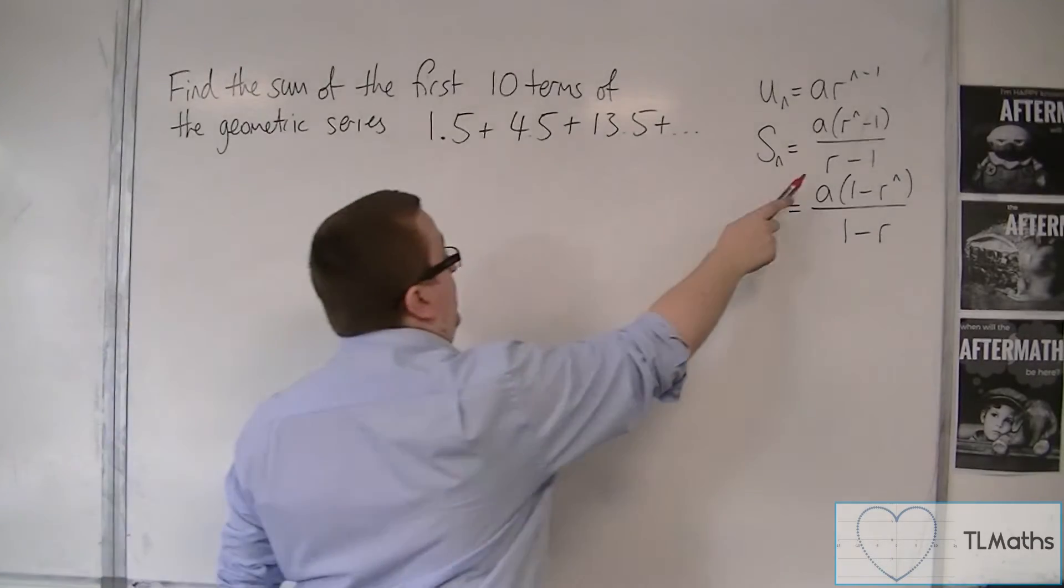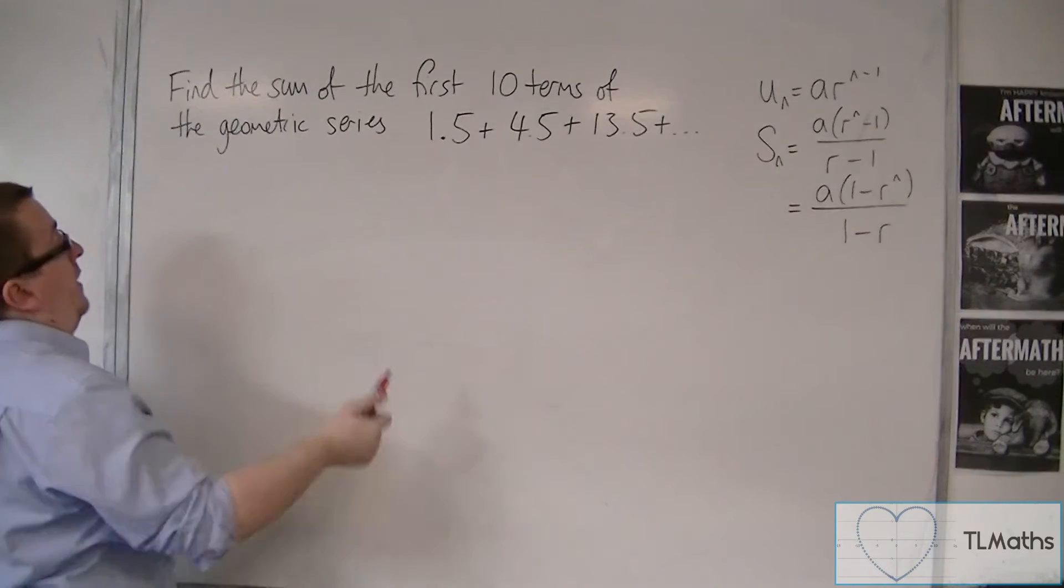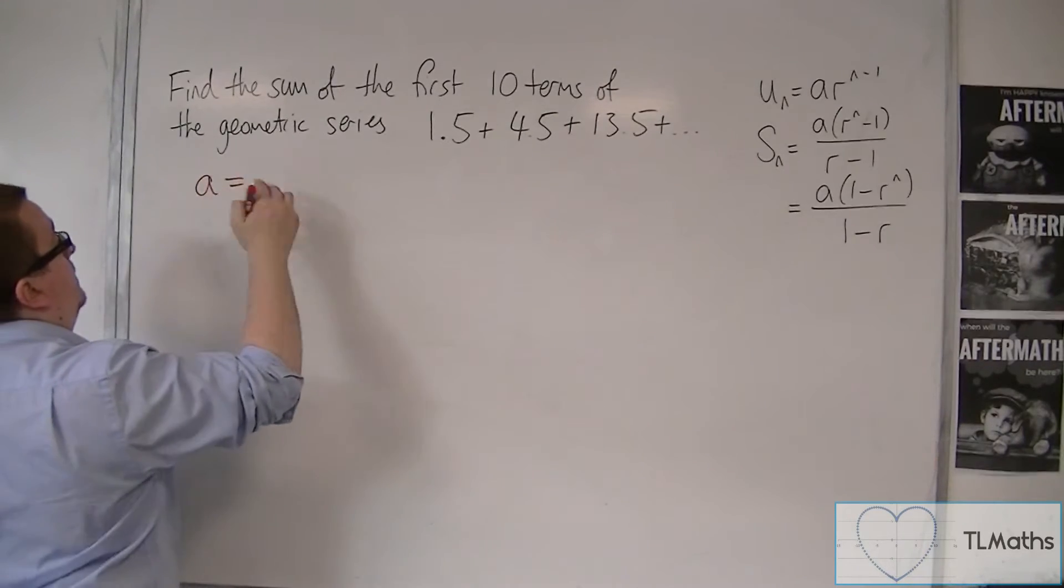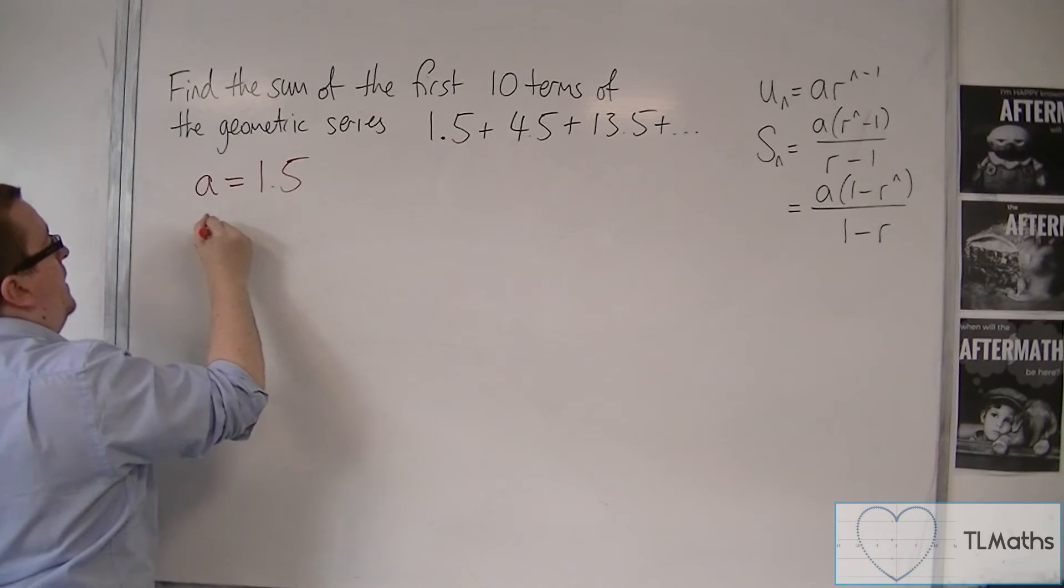Because I need to use either one of those two formulas, and they're the bits that I need. So A is easy - that's the first term of the series, so 1.5. Now R,